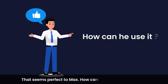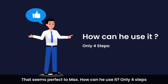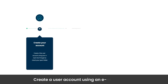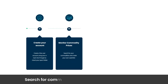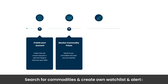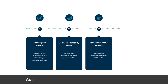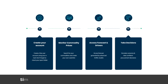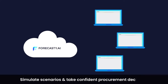How can he use it? Only four steps: create a user account using an email address; search for commodities and create your own watch list and alerts; access forecasts generated by advanced AI and ML models; simulate scenarios and take confident procurement decisions.